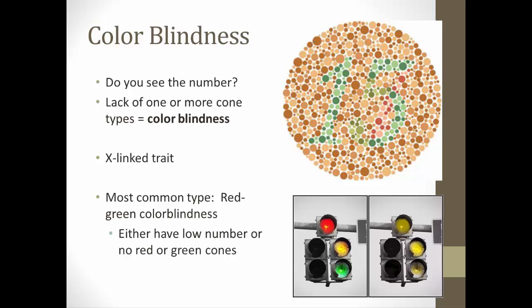If you have trouble seeing the number in the colorblindness test — it's a number 15 — that indicates you're colorblind. Colorblindness means you lack one or more cone types. It's more common in males because it's an X-linked trait; males only need one gene to be colorblind, whereas women need two. A mother may not be colorblind but can be a carrier.